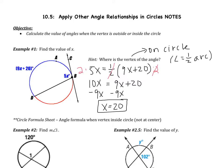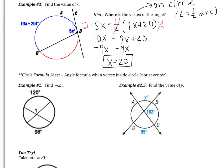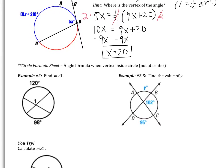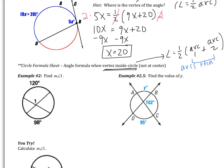Moving on to examples 2 and 2.5, these involve a new formula. From the circle formula sheet: the angle formula when the vertex is inside the circle — but not at the center — the angle is one half of arc 1 plus arc 2. These are the arcs that sandwich the angle.